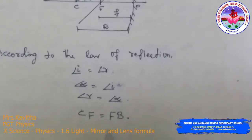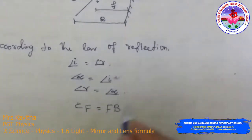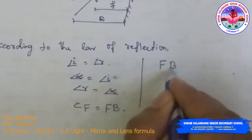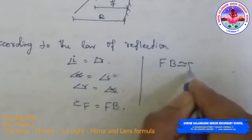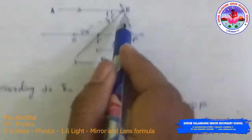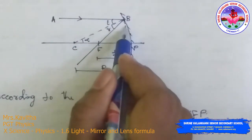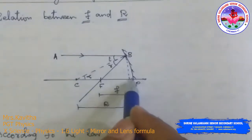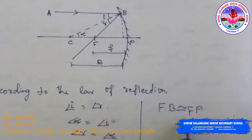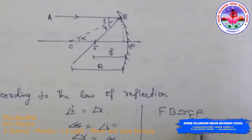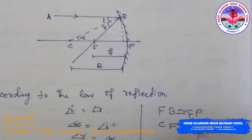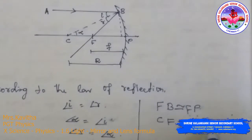Now for the small aperture, we take that FB is approximately equal to FP, because the distance between B and the pole is very very small and is negligible. So we can take CF approximately equal to FB.